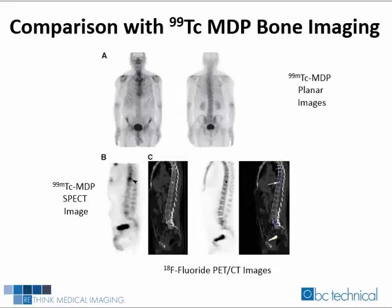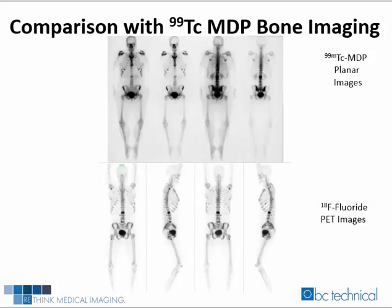On this slide we see a comparison of technetium-99M MDP planar images, a technetium-99M MDP SPECT image, and F-18 PET CT bone images. The planar bone image does not show any abnormality in the spine. The bone SPECT image shows the abnormality as indicated by the black arrowhead. The abnormality is also seen on the CT, PET, and fused image, as indicated on the fused image by the white arrow. The F-18 image has better resolution. Additionally, the PET image reveals more abnormalities in the pelvic area than do the MDP images.